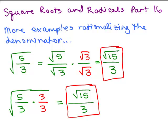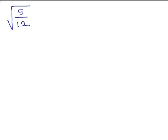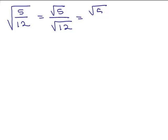Let's try another example: square root of 5 twelfths. There are a few ways you could do this problem. One way is to simplify by writing the square root of the numerator over the denominator. But the square root of 12 is not simplified because 12 is 4 times 3. So as a shortcut — we know 12 is 4 times 3, the square root of 4 is 2 — you could take a 2 out of the square root, and you'd have 2 square roots of 3.